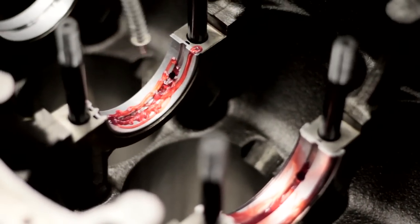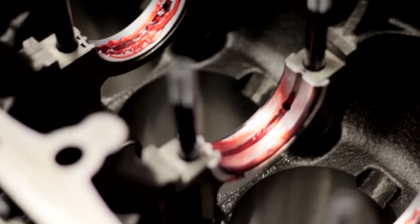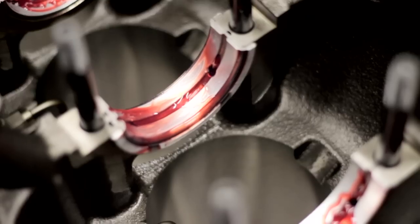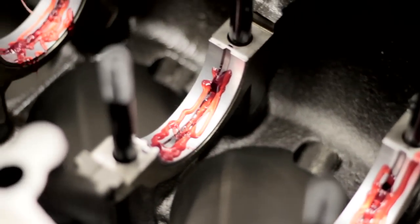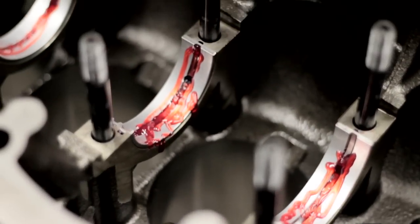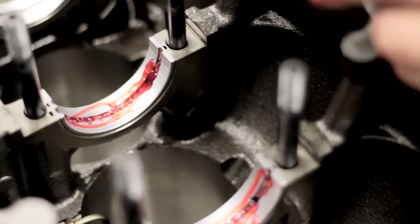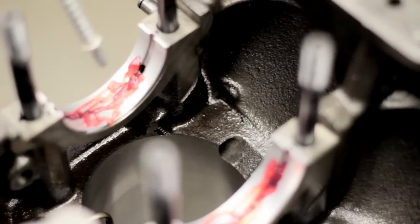So when you hear about somebody's thrust bearing going out, that's the bearing? This is the bearing, number six on this model. Some of them will run them in the center, some of them will run them in the rear. The BMWs like to run them on number six. So when you're stepping on your clutch, that's pushing the crankshaft forward.